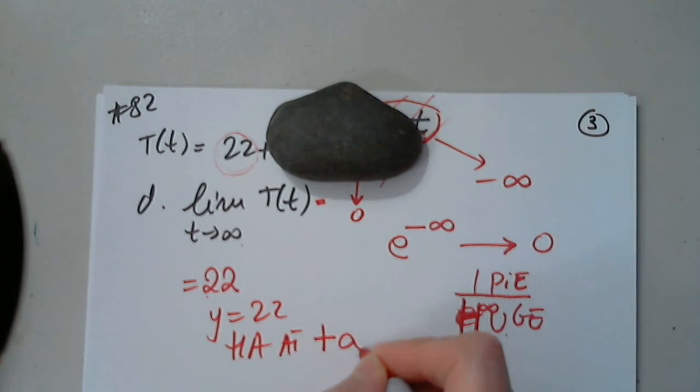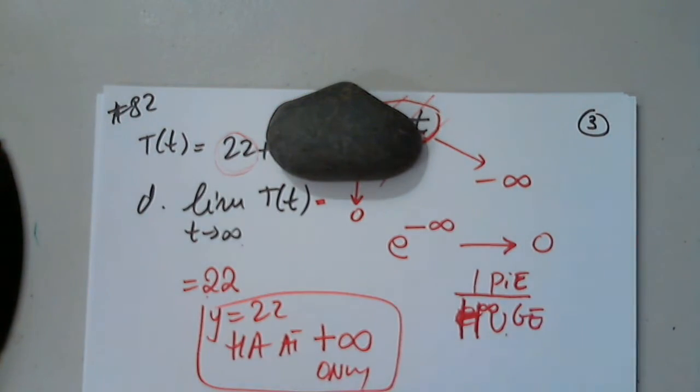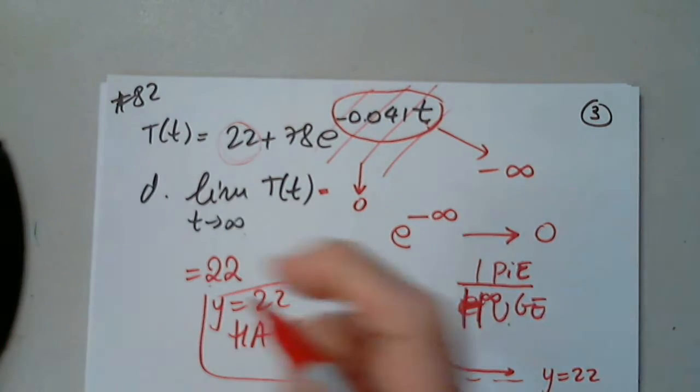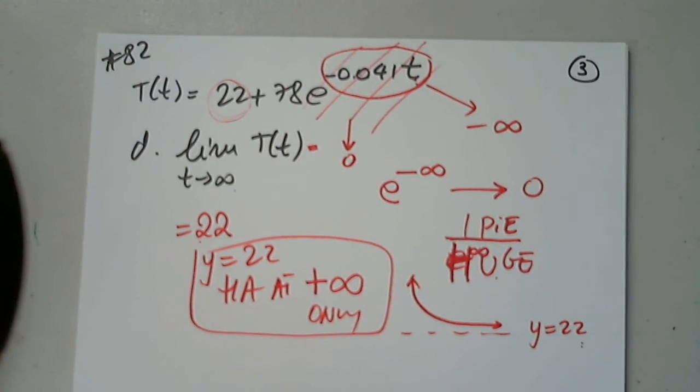And this is the horizontal asymptote at positive infinity only. So eventually, from somewhere, if this is y equals 22, eventually the temperature will get closer and closer to the ambient temperature. That's it.